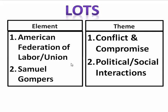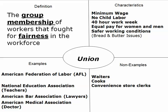That's conflict and compromise of political and social interactions. A union is a group or membership of workers or laborers that fight for fairness in the workplace. Some things they wanted were a minimum wage, no child labor, a 40-hour work week instead of 60 or 70 hours, time off, equal pay for men and women, safer working conditions, and better wages.